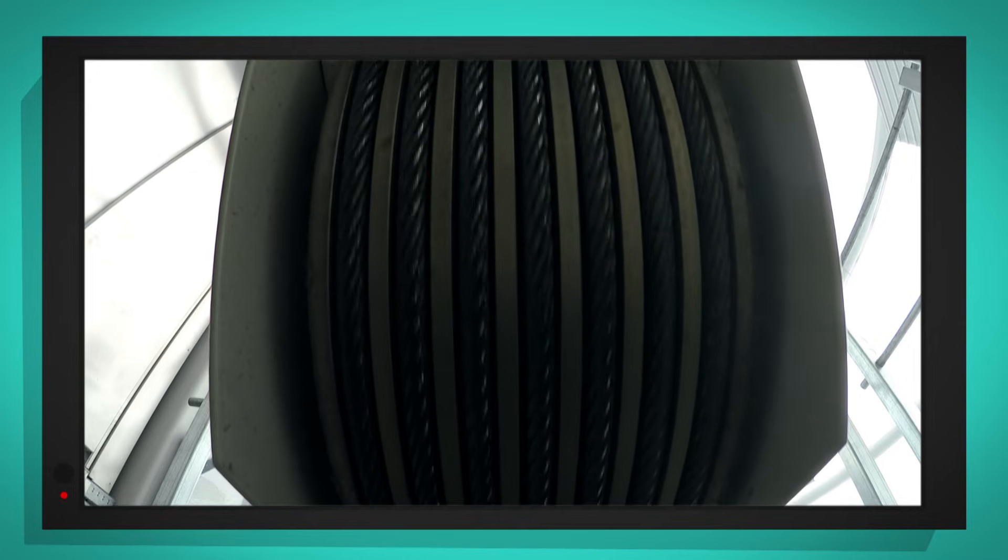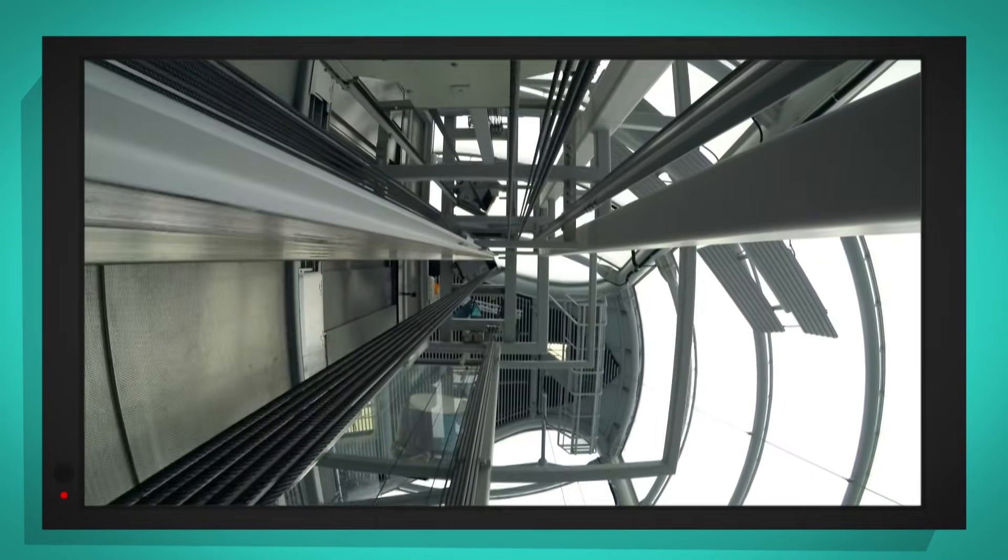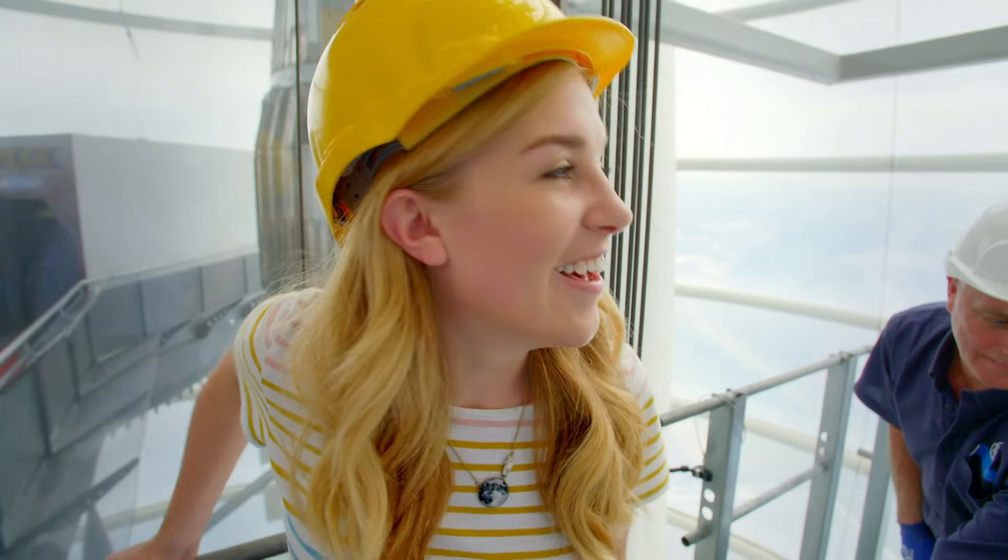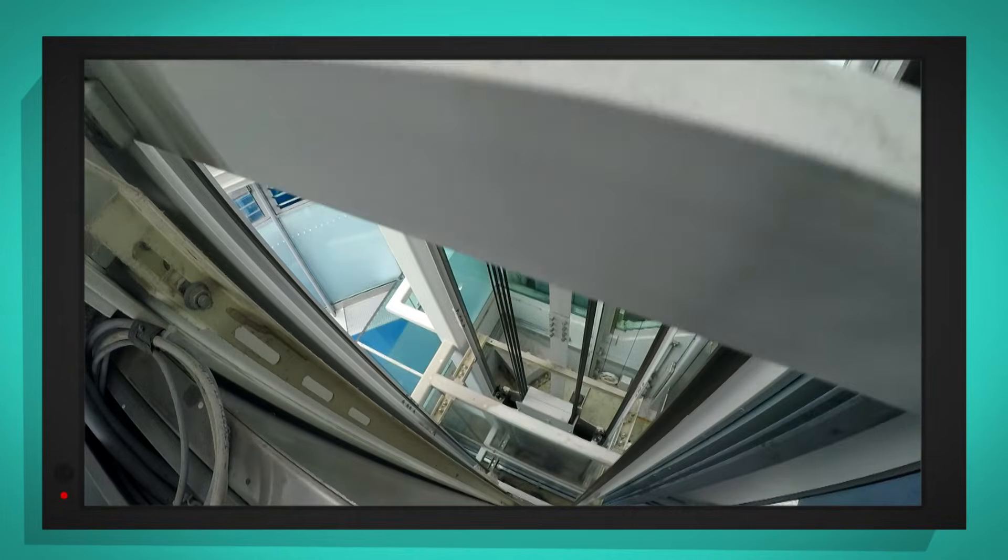The sheave wheels are turning and the steel ropes are lowering the lift car down the lift shaft. This is so much fun. We're going to the ground floor. So the sensor on the top of the lift car is looking for the floor vane with a pattern that matches the ground floor.